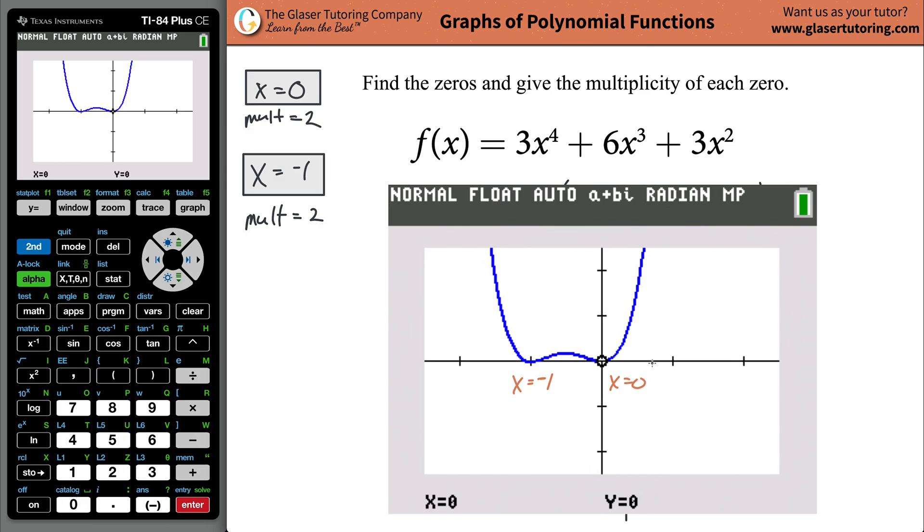That is a pattern you will notice whenever you have even multiplicities. So notice how they bounce in both cases. The odd multiplicities will cross the x-axis. Now, why is that the case? I got a video dedicated to explaining exactly why that's the case. If you're curious and you really want to understand, check out the link in the description below. I highly suggest you do view it because it will make this make a whole lot more sense.